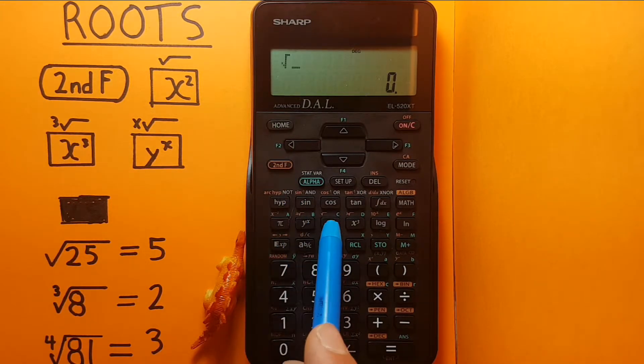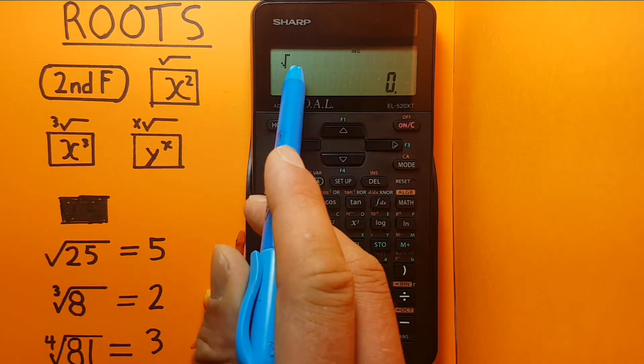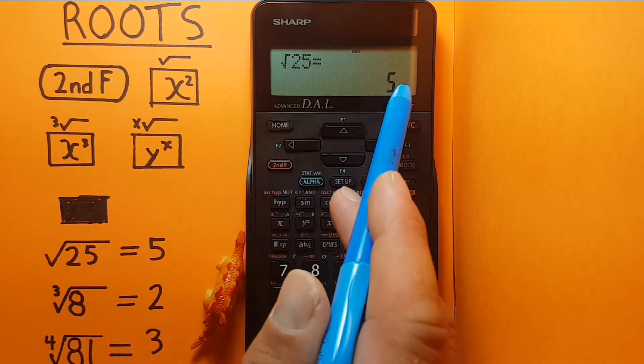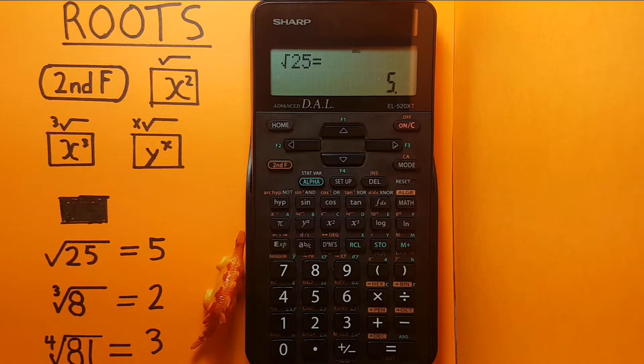So second function x squared gives us the root symbol up top, then 25 and equals gives us the answer of 5. Square root of 25 equals 5.